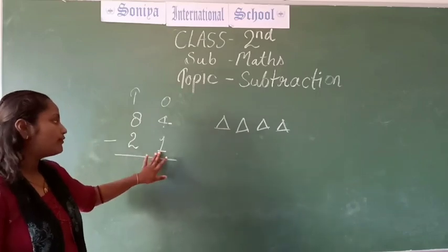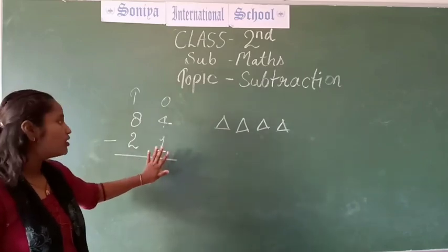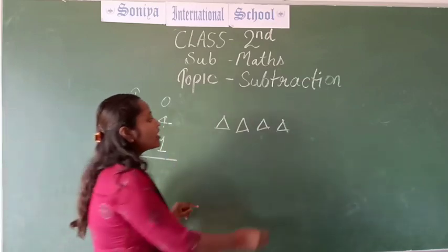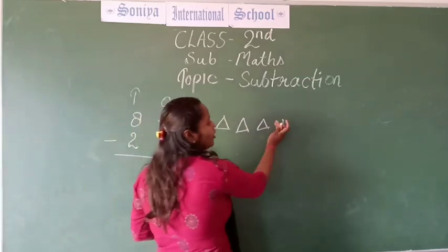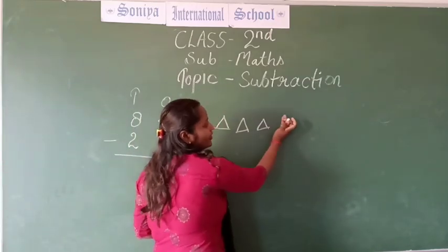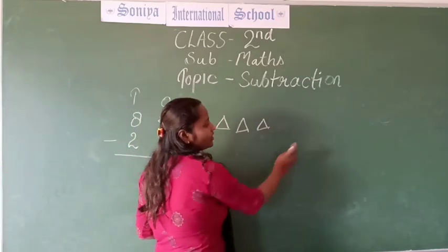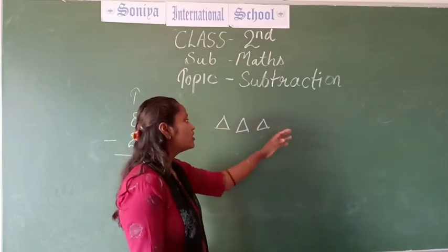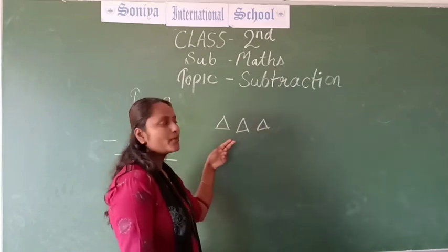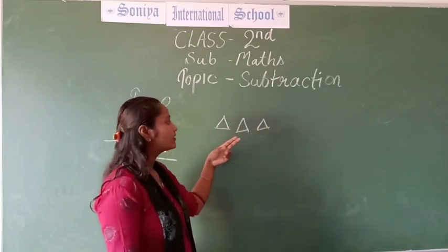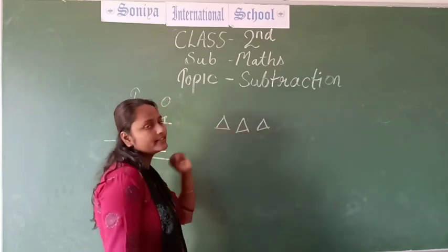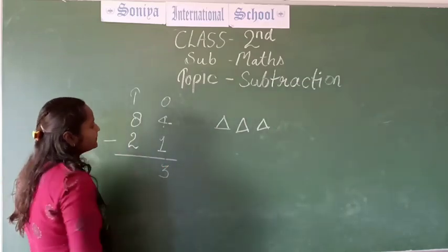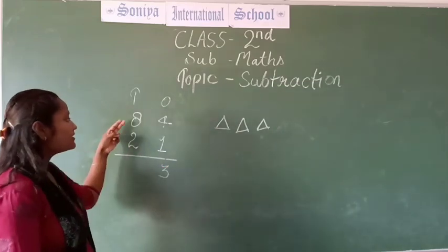And what is this? This is 1. So what we will do? The sign of minus — we are taking away 1. So how many are remaining? 1, 2, and 3. So we are writing 3.